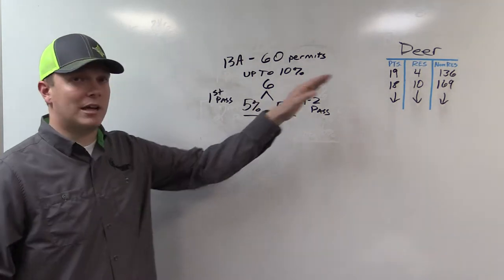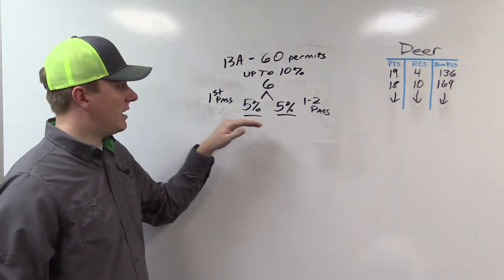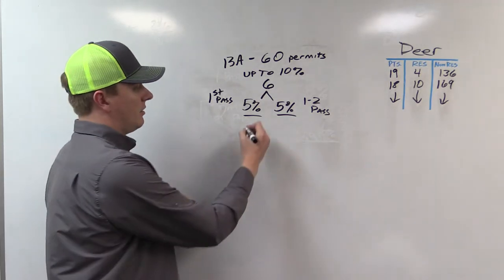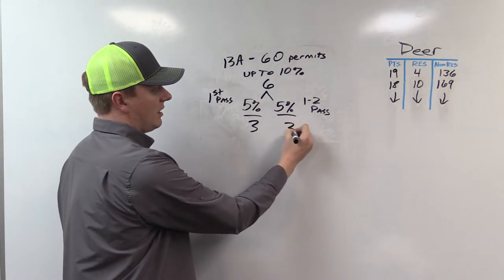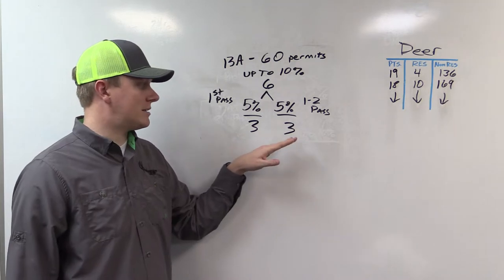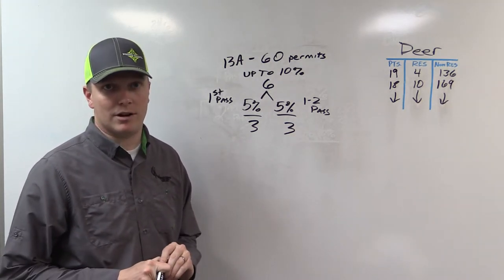If you have maximum points, this is not in your favor. It means they just cut your tags in half. Now you're chasing for 3 tags there, and the rest of us have a chance at a random tag, up to 3 for non-residents.